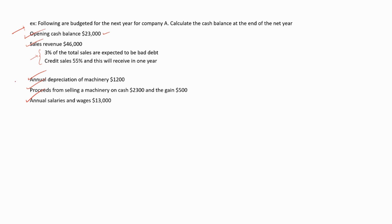They have given us the annual depreciation of machinery. Depreciation is a non-cash item, so this amount will not be considered under cash budget. They have given us the proceeds from selling a machinery on cash — this is a cash item, so we consider this under cash budget. They have also given us the gain earned by selling the machinery, which is $500. We do not consider this value under cash budget because this is a non-cash item.